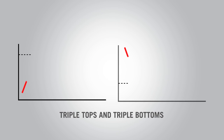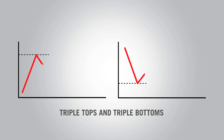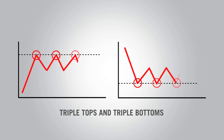Triple tops and bottoms are extended variations of double tops and bottoms. Instead of two tops or bottoms, there are three. The only difference between the doubles and the triples is that there is a third support or resistance level in the chart pattern. You can calculate the profit target the same way as the doubles.